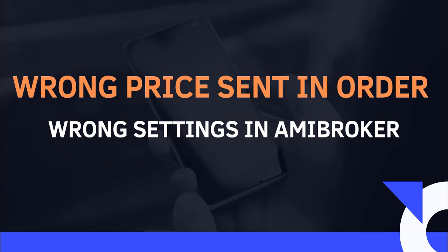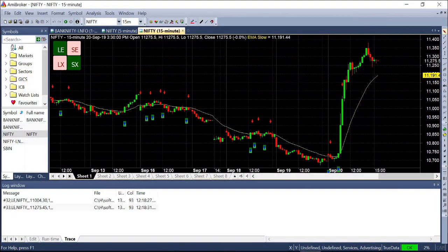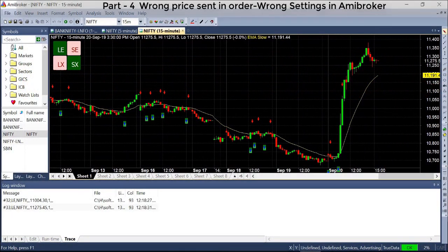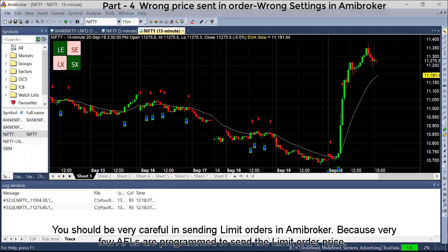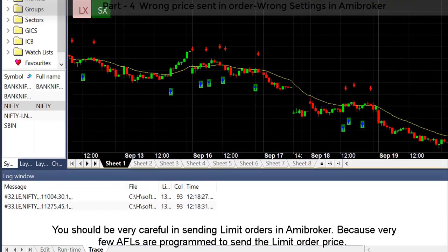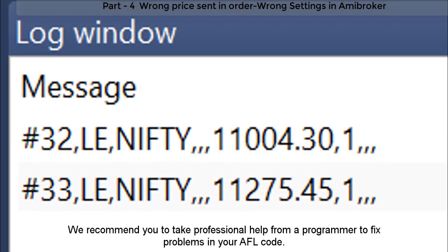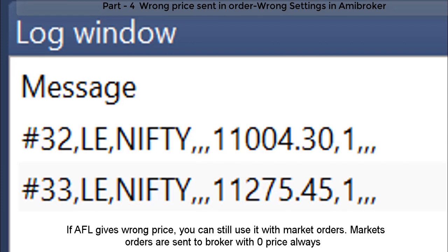Wrong price sent in order: you should be very careful when sending limit orders in ME broker, because very few AFLs are programmed to send the correct limit order price. We recommend taking professional help from a programmer to fix problems in your AFL code. If the AFL gives a wrong price, you can still use it with market orders. Market orders are always sent to the broker with zero price.